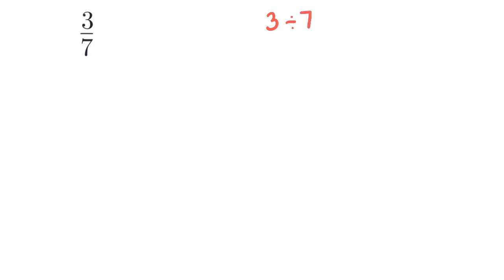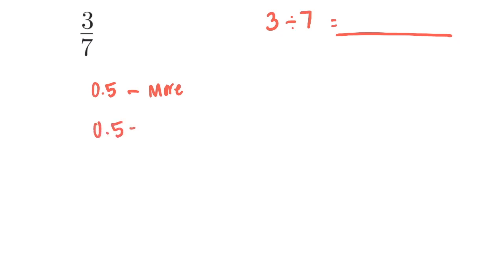Now let's look at this number. From the last video, we learned how to write 3 divided by 7. Before I find my decimal equivalency, I want to estimate how much it would be. Will it be more than 0.5 or less than 0.5, and why would you think that?